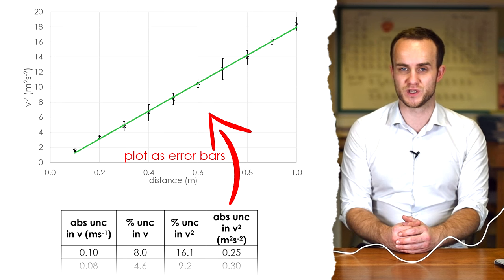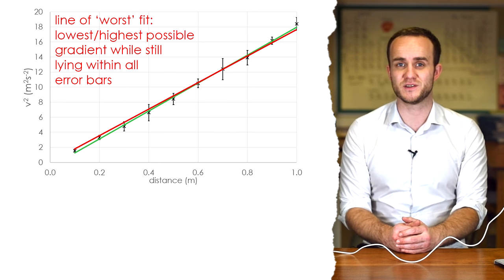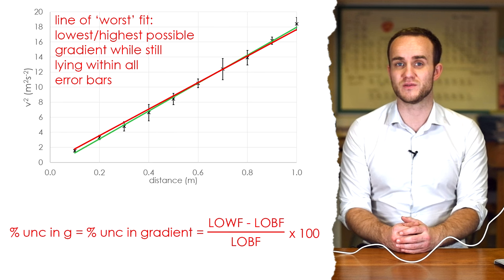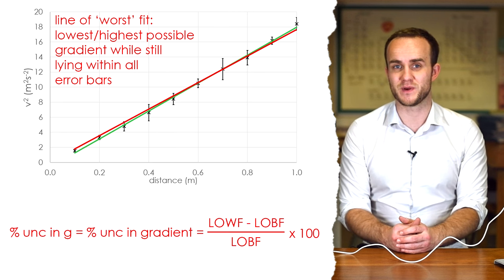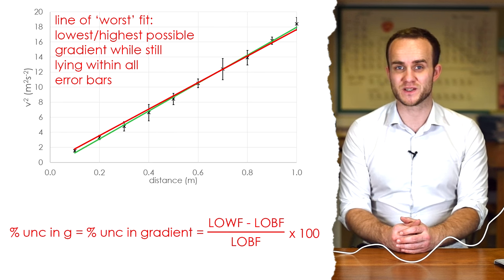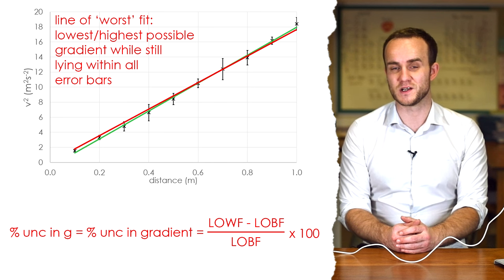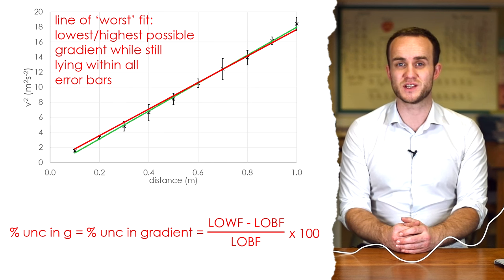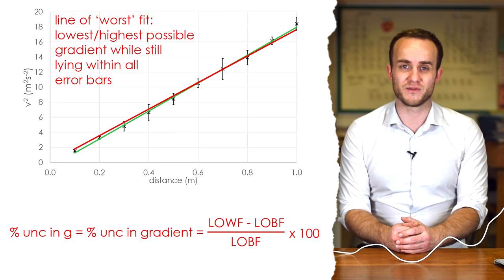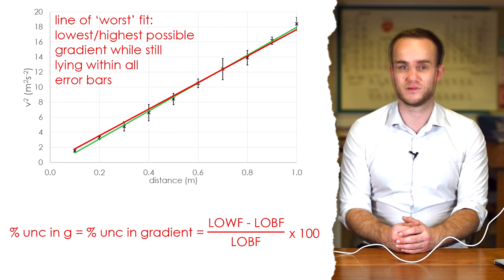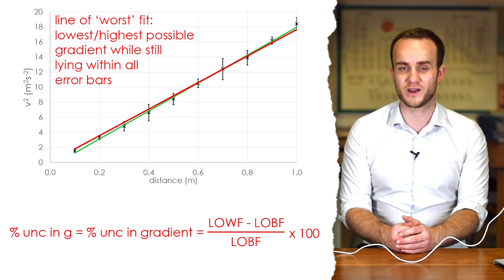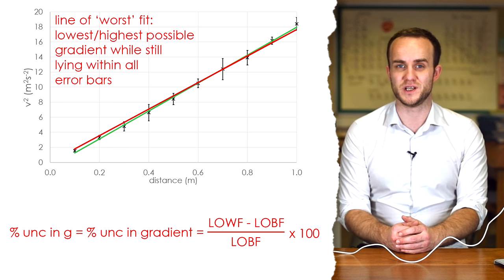To find the percentage uncertainty in your gradient then we take the gradient of the line of worst fit, take away the line of best fit, divide by the line of best fit's original gradient and then times by 100. Because this is just equal to 2G that therefore means that that percentage uncertainty is going to be the same for G itself and then you can therefore find a final absolute uncertainty in G from that.